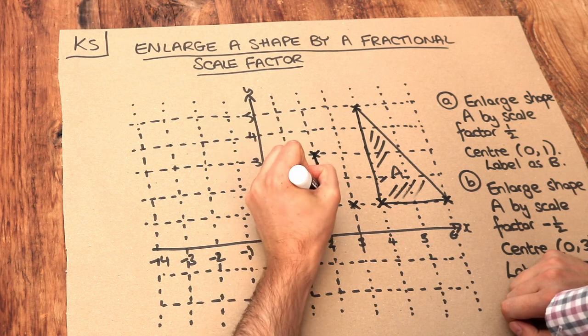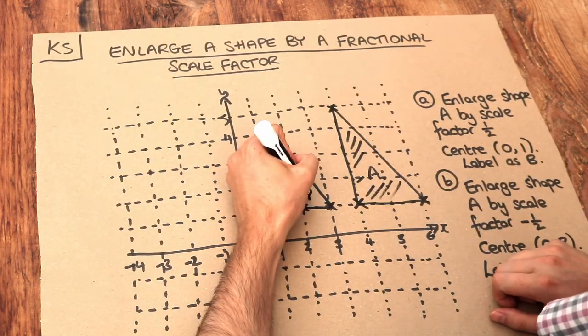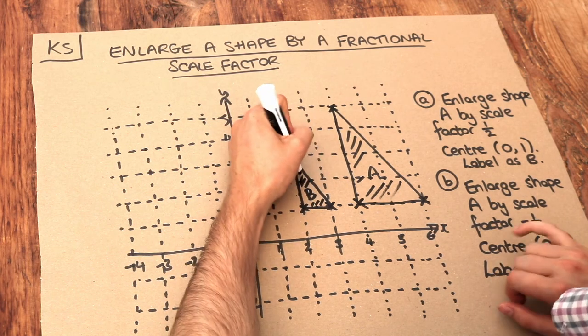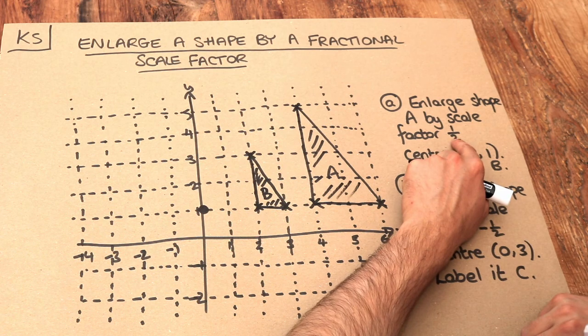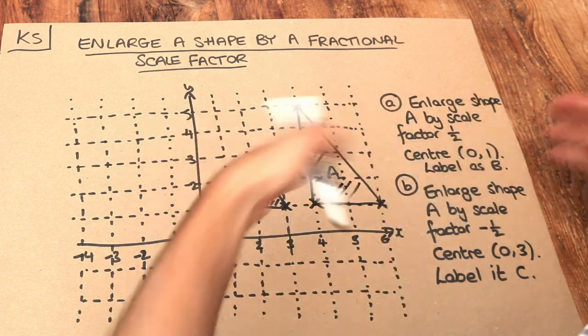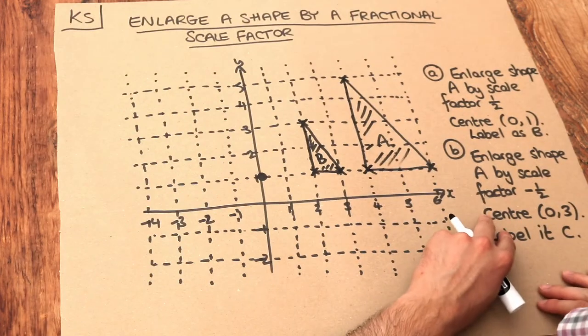Joining those points together, we get our new shape. I label it as B, as per the instructions. We can see the shape has become half as big, because the scale factor indicates how many times bigger in width and height the shape becomes. Since it's half, the shape is actually getting smaller.